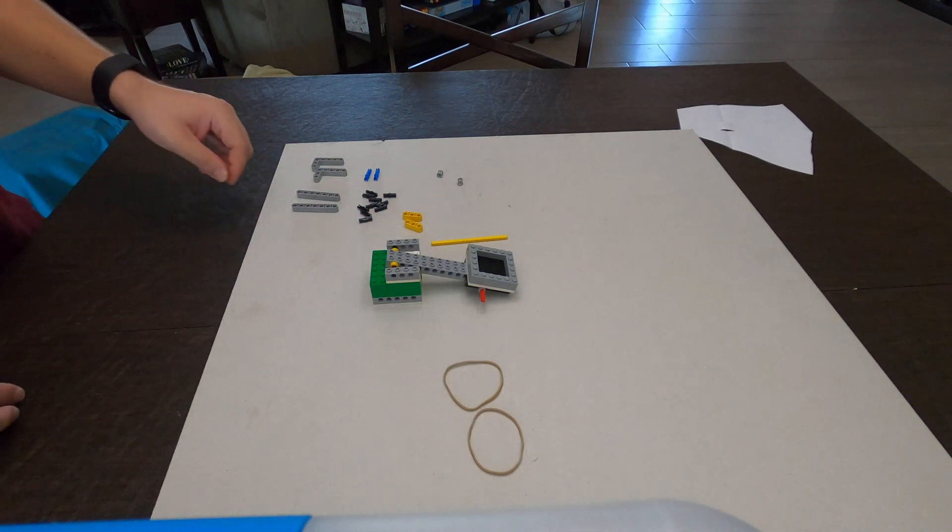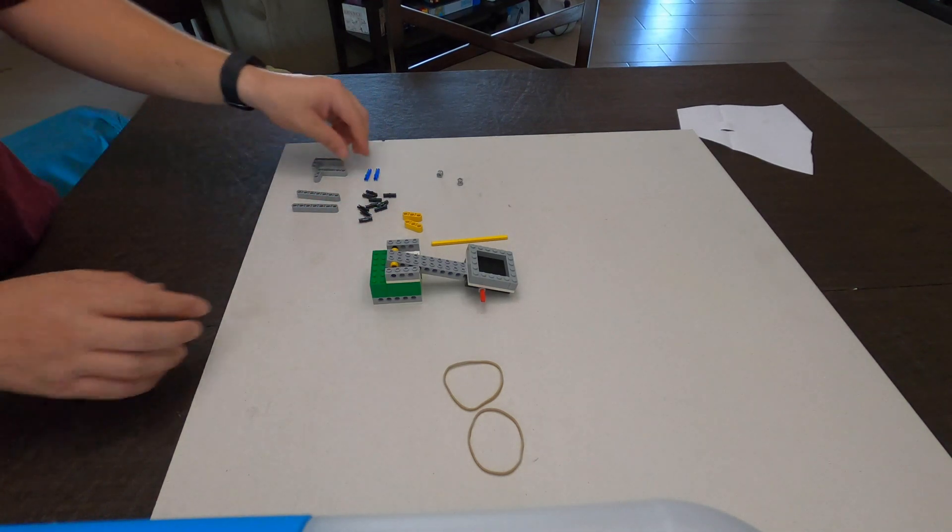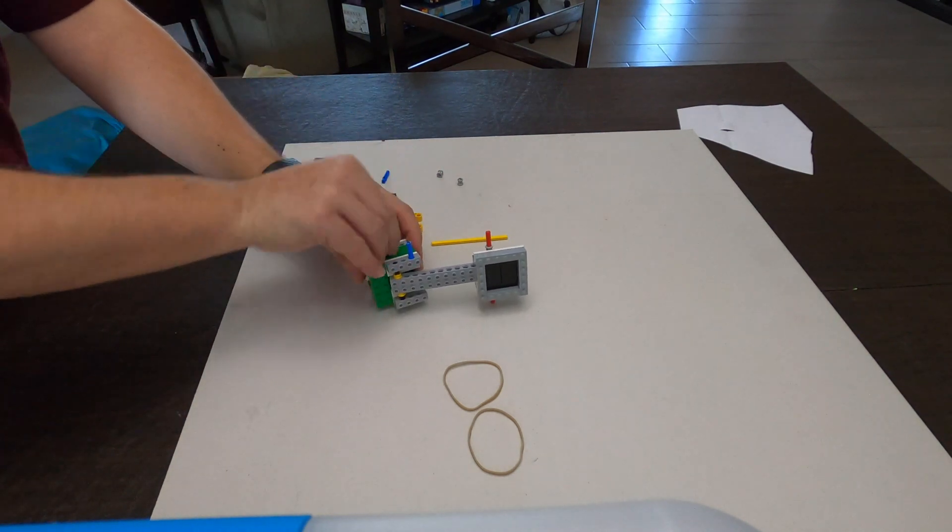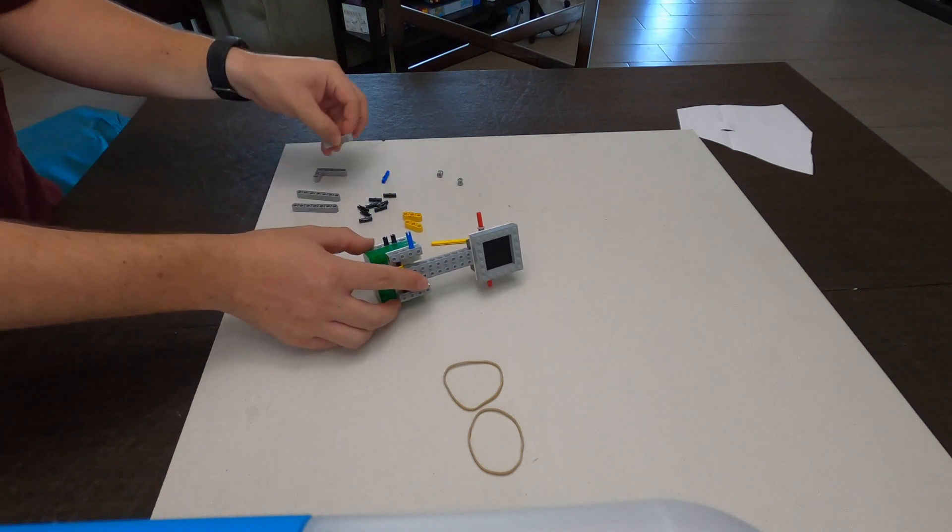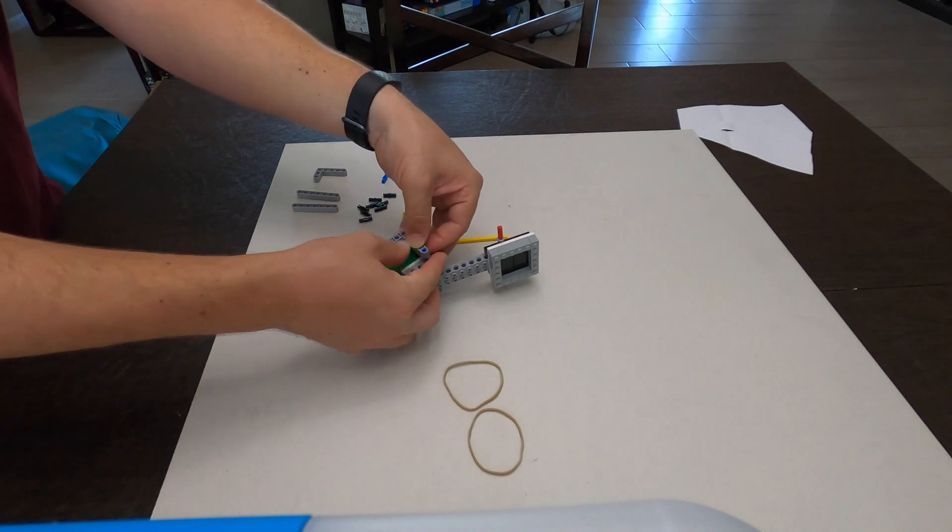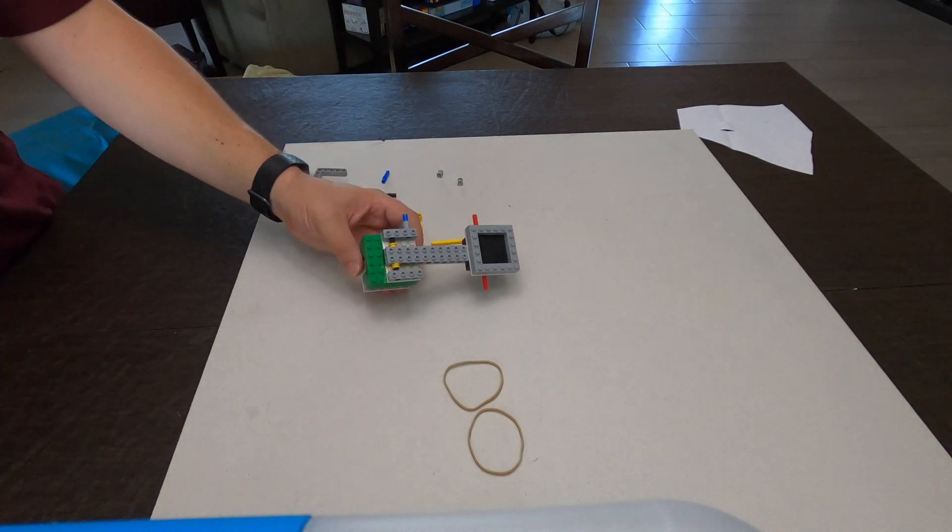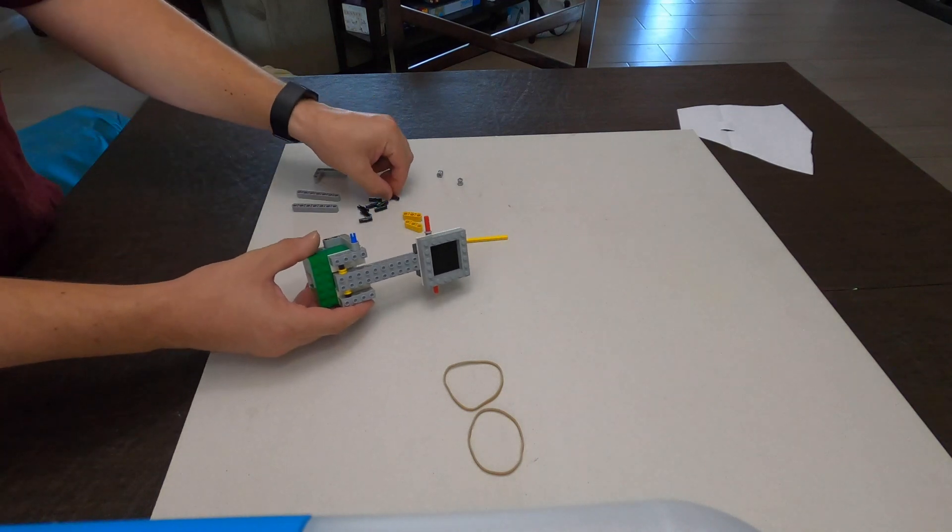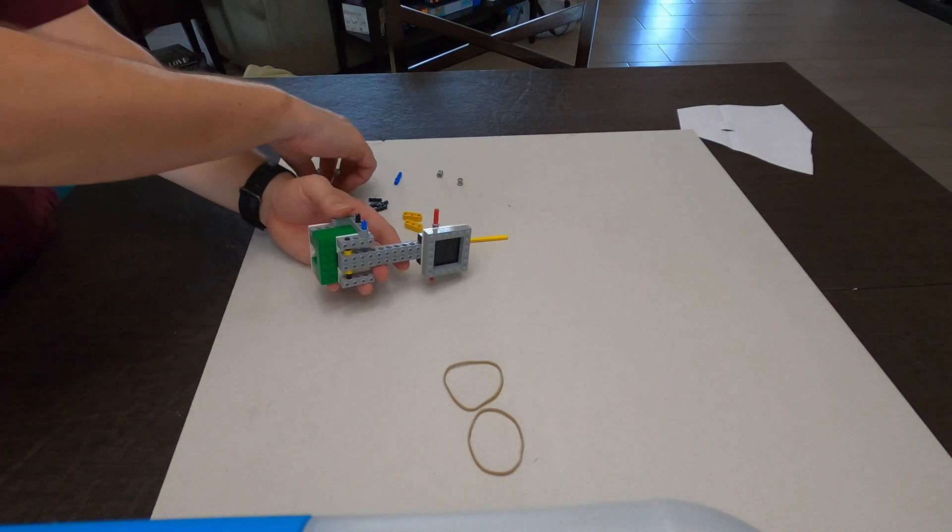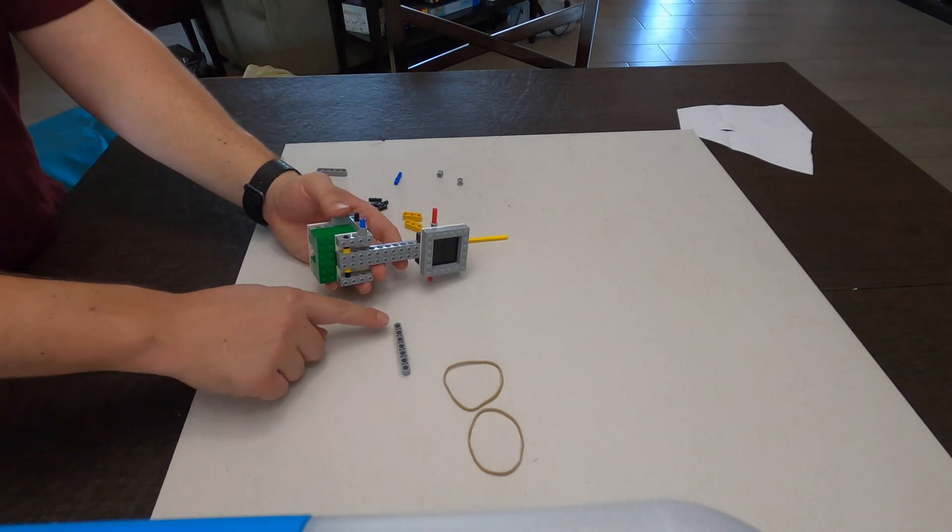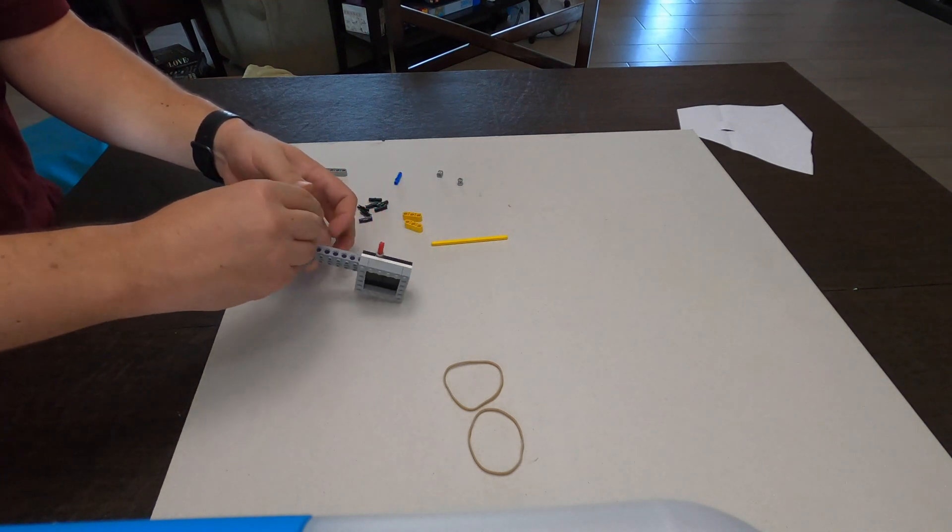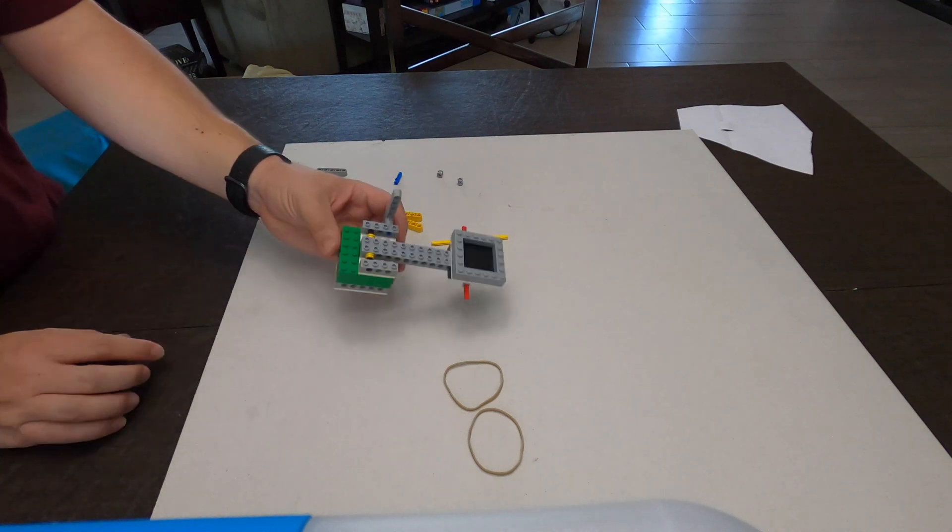Now we just need to build our top axle that's going to hold our rubber bands. So we're going to start by putting in a blue and then two black pins and then we're going to take one of our L pieces. It's easiest if you put the top one in first then kind of push it down a little bit and then it should all fit snugly together. Add a black pin because we're going to give some support to our length seven lift arms, our lift arm here. You got to kind of wiggle it into place a little bit.